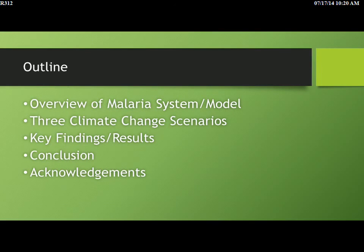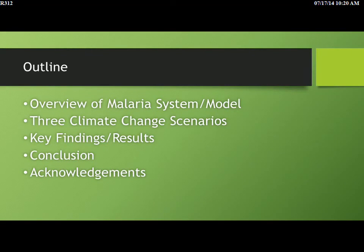Today I'm going to talk through this outline. I'll discuss the malaria system and the model we've developed, three different climate change scenarios we evaluated — since there's not complete agreement on what's going to happen in the future — and then what that means, and try to wrap things up.